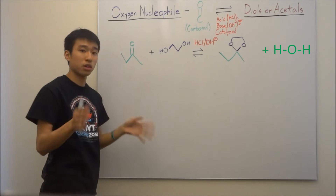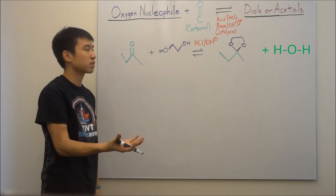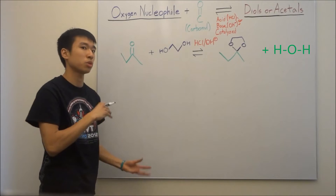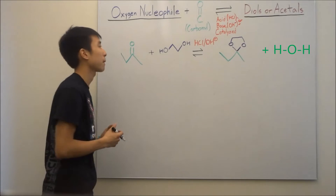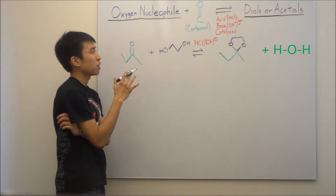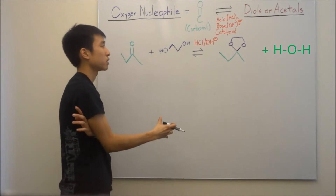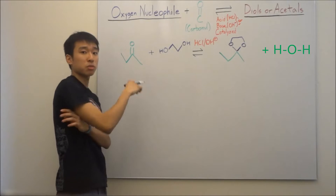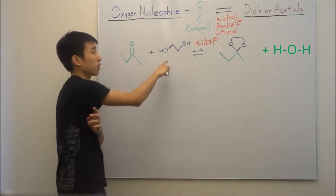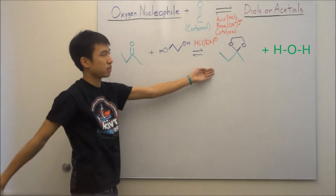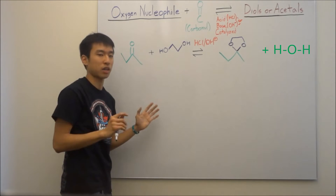Try to follow along and be one step ahead of me — guess the next step before I do it, so you can realize what you got wrong or right. So, you're going to create a cyclic acetal, which is a really good protecting group because it protects your carbonyl from Grignard reagents that can substitute here, or other alcohols that can substitute here. Your double ether kind of cyclic molecule is not very reactive.